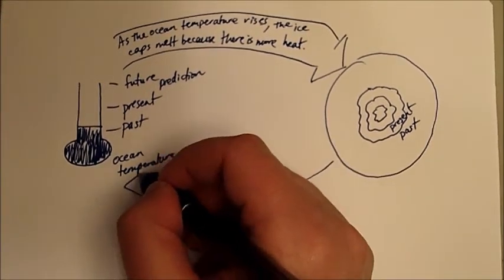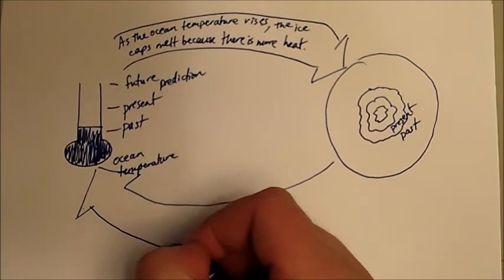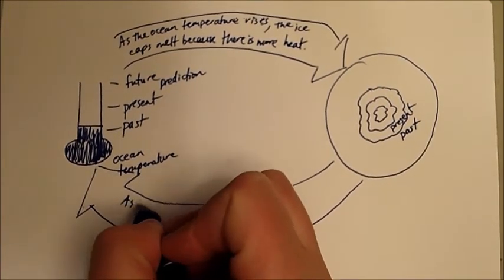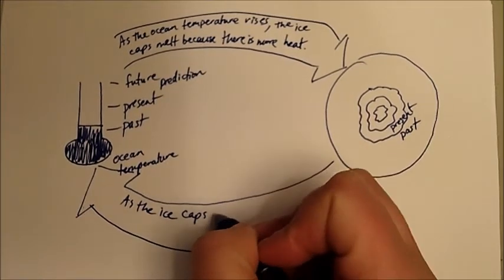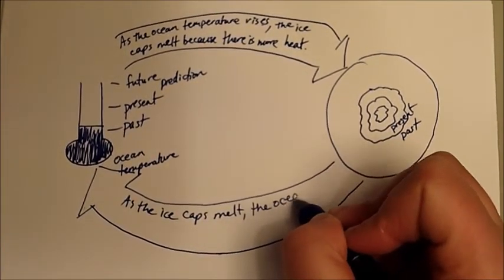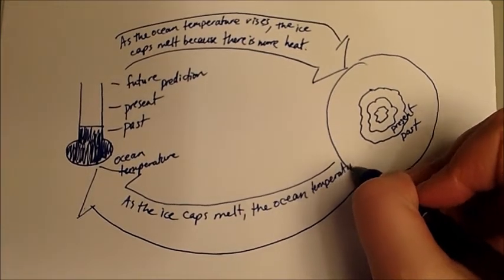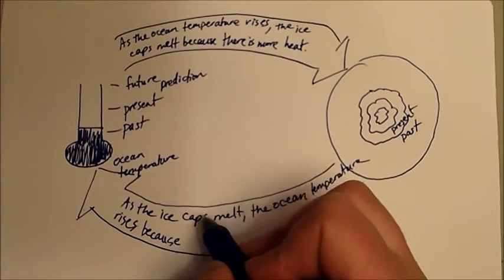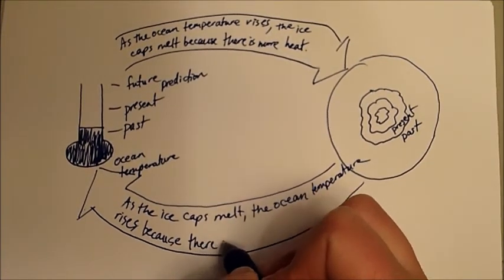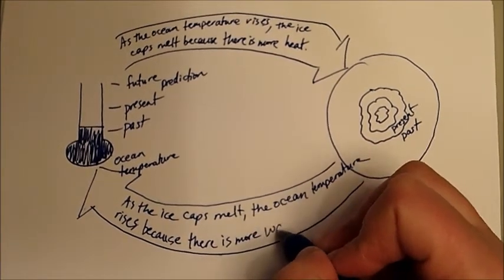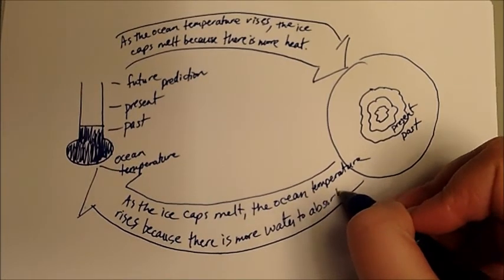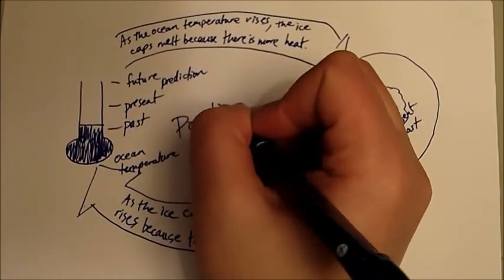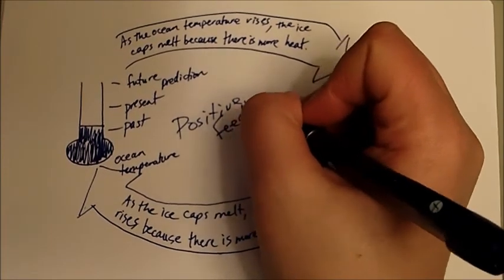Now with more heat, with our ice caps melting more, what's going to happen? Well, let's see. As the ice caps melt, the ocean temperature rises because there is more water to absorb the heat. Now what is this? This is our positive feedback loop.